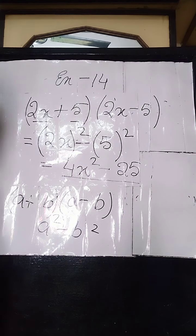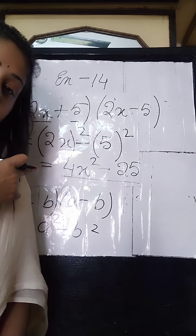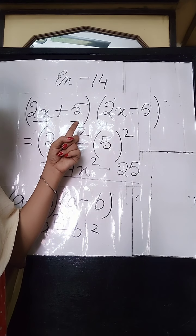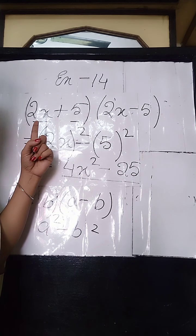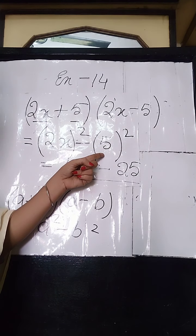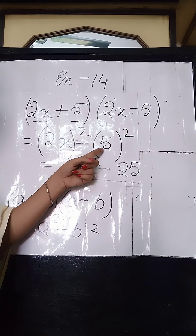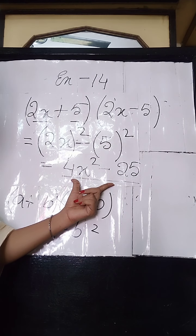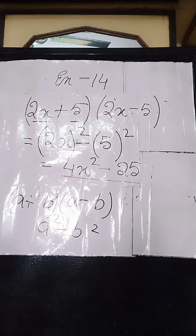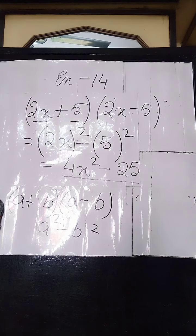You can see very easily how I have done this sum. Here 2x is the first term and 5 is the second term. The result is the square of the first term minus the square of the second term, giving us 4x square minus 25. We simply apply the formula A plus B into A minus B and write the answer.